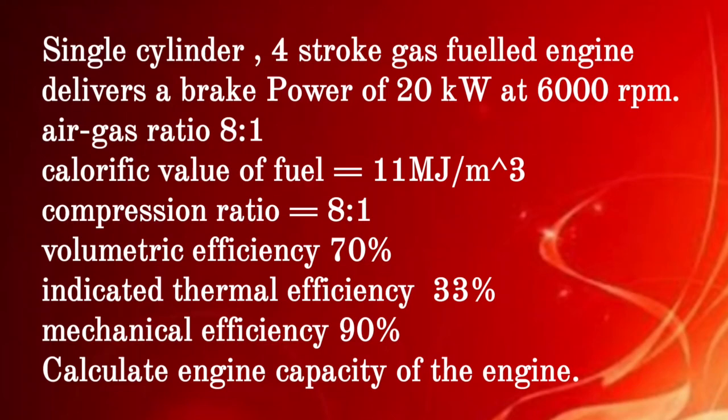Given question: a single cylinder 4-stroke gas fuel engine delivers a brake power of 20 kW at 6000 rpm. Air-gas ratio is 8 to 1. Calorific value of fuel is 11 MJ per meter cube. Compression ratio is 8 to 1. Volumetric efficiency 70%, indicated thermal efficiency 33%, mechanical efficiency 90%. Calculate the engine capacity.